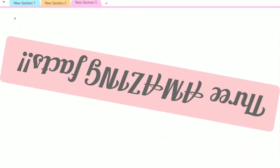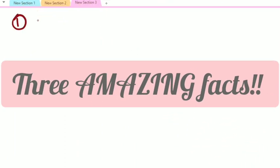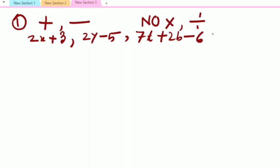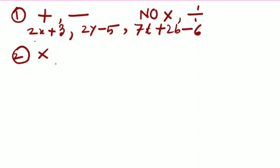Children, here are three amazing facts about algebraic expressions. Number one: terms are always separated by plus or minus or both, but no multiplication, no division. For example, 2x plus 3, 2y minus 5, and 70 plus 2b minus 6. Fact number two: in the term, we will get only multiplication or division or both, but no plus, no minus.